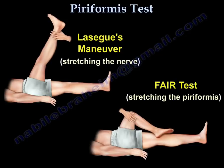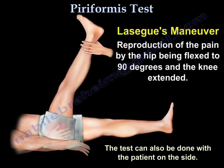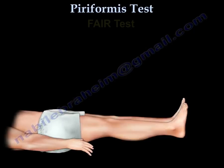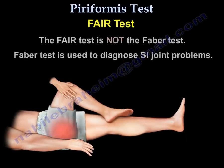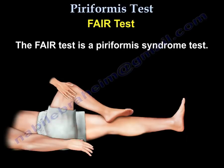The LASUD maneuver is a test stretching the nerve, and the FAIR test is stretching the pariformis muscle itself. The LASUD maneuver involves reproduction of pain by the hip being flexed to 90 degrees and the knee extended. The test can also be done with the patient on the side. The other test is the FAIR test. FAIR test is not the FAVOR test — FAVOR test is used to diagnose sacroiliac joint problems. FAIR test is a pariformis syndrome test.